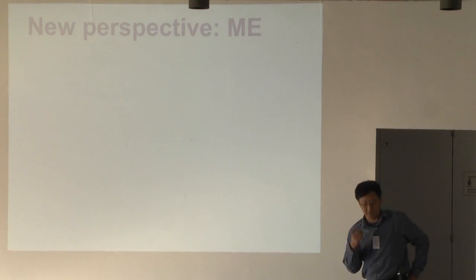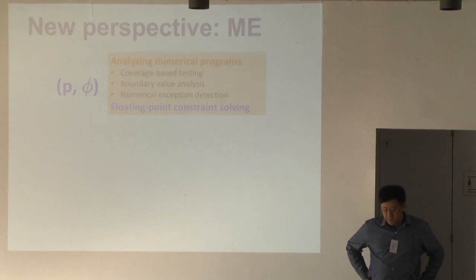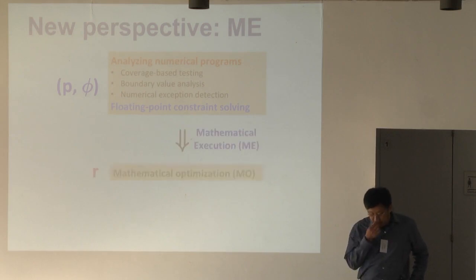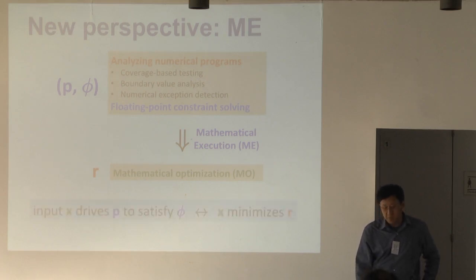Here is our idea and we call it ME, mathematical execution. The idea is that we're trying to formulate an analysis problem on numerical software. So here we have a program P, that's a numerical code, and a property we want to check against this program. The properties can be: I want to find all the inputs to cover all the branches, I want to find all the boundary values so I can do some additional testing, I want to find the runtime floating point exceptions, overflow, underflow, or I want to solve a floating point constraint. Now we have this problem we want to solve and the idea is that we're trying to map this to a floating point program we call R and then we can solve this R using mathematical optimization. The property we want to have is if we have an input that drives P to satisfy this property if and only if X minimizes this mathematical optimization problem R. So that's the goal we want to achieve.